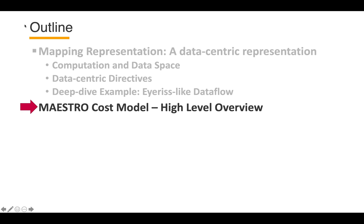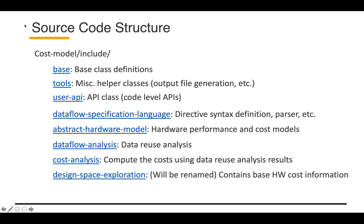Let's move on to the cost model side. I'll provide a high-level overview about the Mysore cost model. First, let me show you the source code structure. Most of the files are under the cost model slash include folder. The base folder includes some base class definitions, and tools include some helper classes such as output file generation.